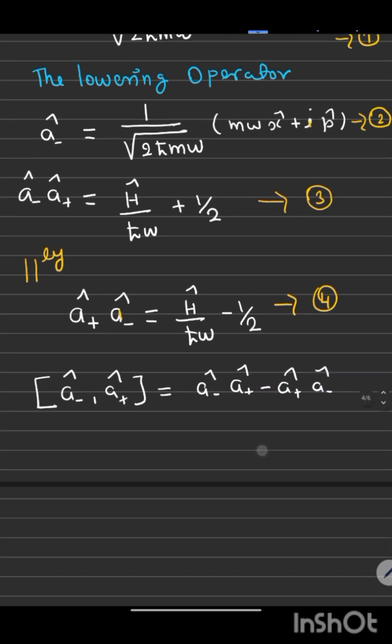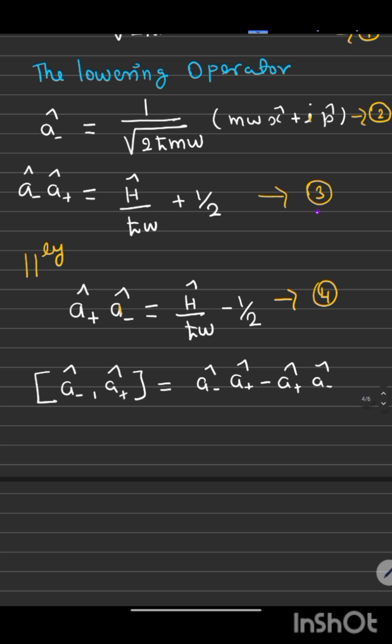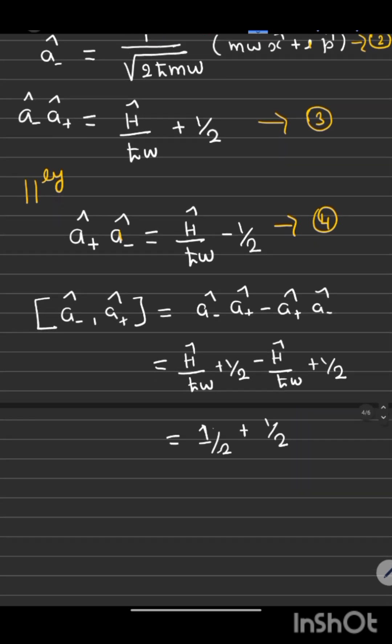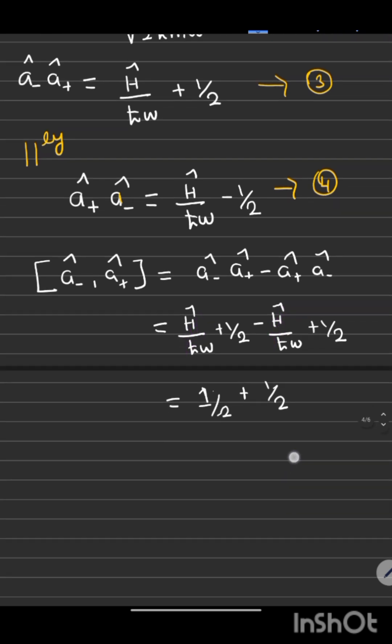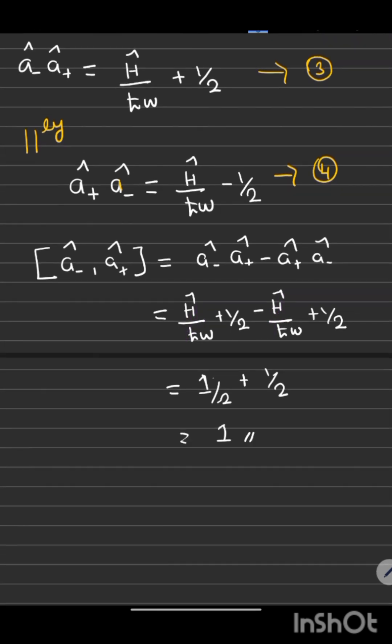Substituting the values of this operator, product of this operator into this equation 3 and 4 into this equation will get this and here both are same. So this can be cancelled, you will get 1 by 2, 1 by 2, so the commutator is 1.